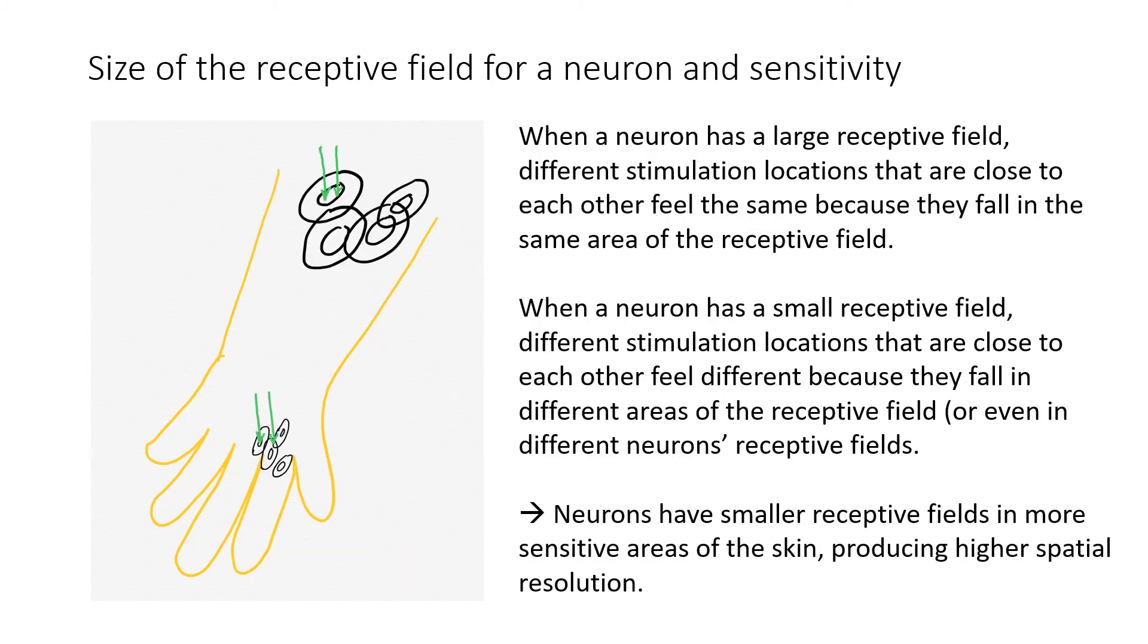So as you can see on this very strange-looking hand here, there is a relationship between the size of a receptive field and the sensitivity of that area of skin. For the arm, for example, the neurons in the arm region of the somatosensory area have relatively large receptive fields. This means that two different stimulus locations may end up feeling like the same location because the neural activation pattern will be the same.